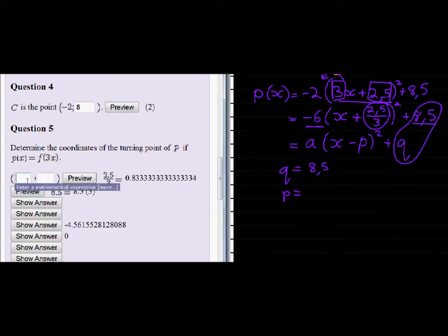So we can input the answer directly as 2.5. Oh, don't forget it's a negative 2.5 divided by 3. Because this is supposed to be negative P.